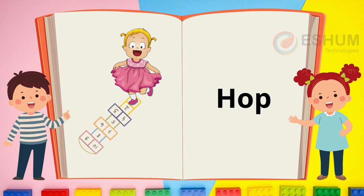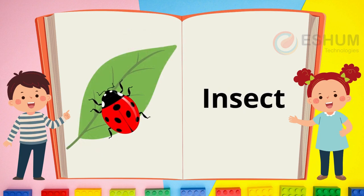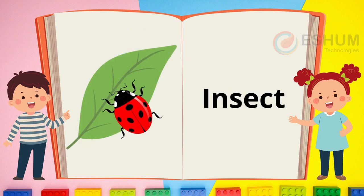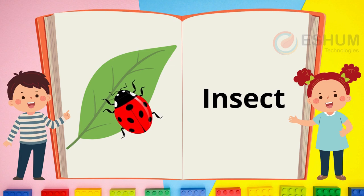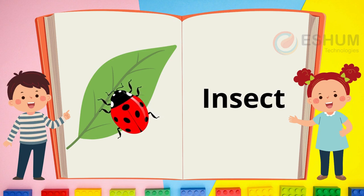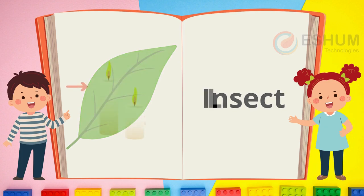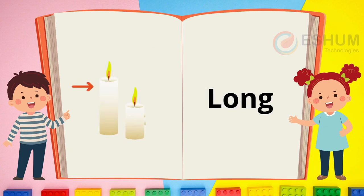Many animals can hop. What animals hop? Do you know? Do you see the little bug with six legs? That is an insect. What is the name of the insect? Do you like insects?